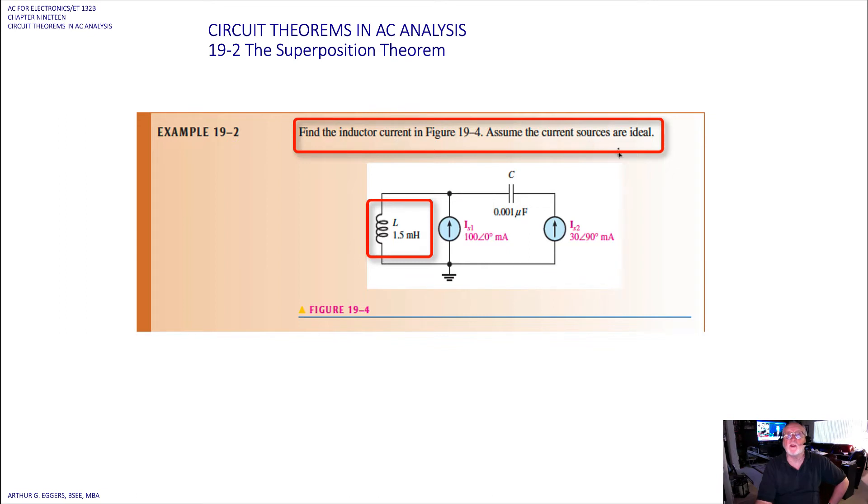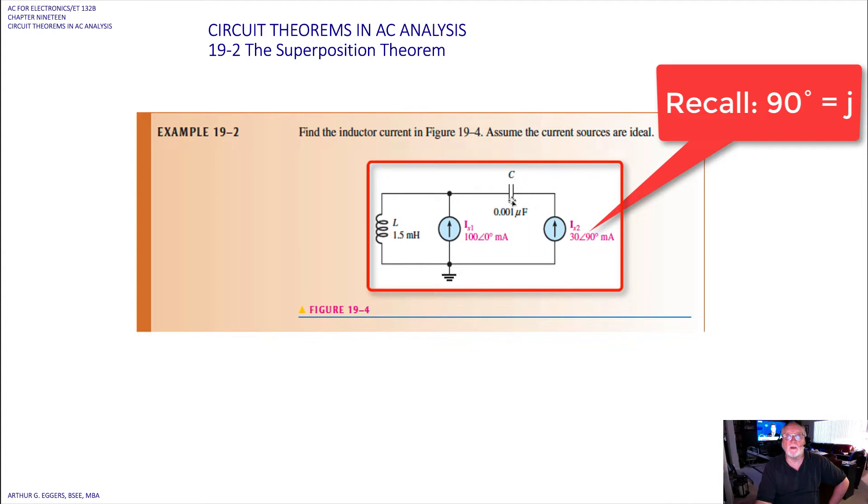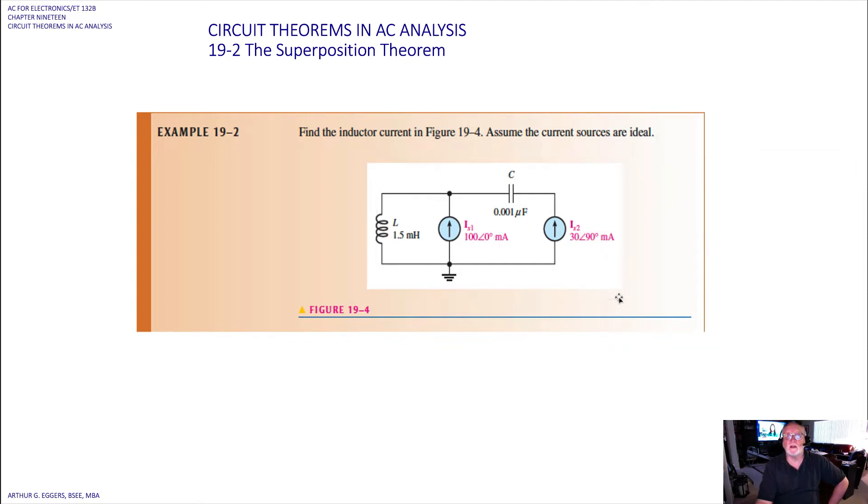Assume that the current sources are ideal. So we've got an inductor, we've got a capacitor, both of them are in their non-reactive values, and we have two ideal sources here, 130 at 0 and 90 degrees.